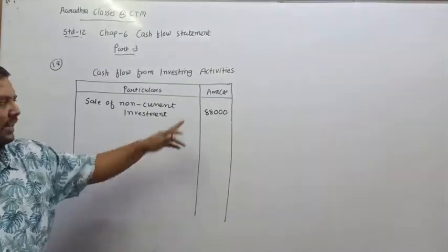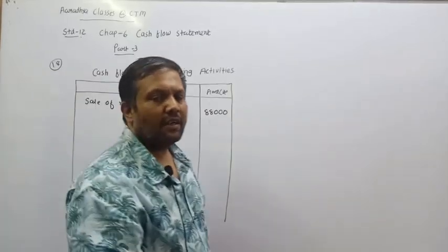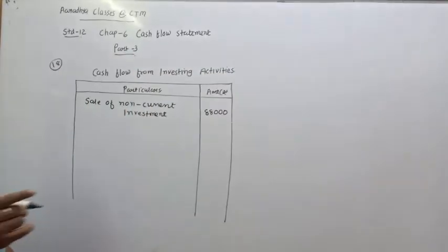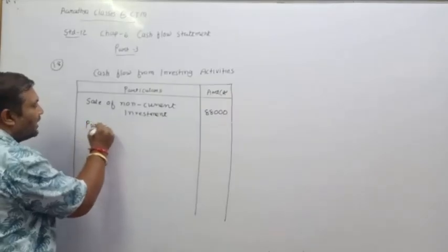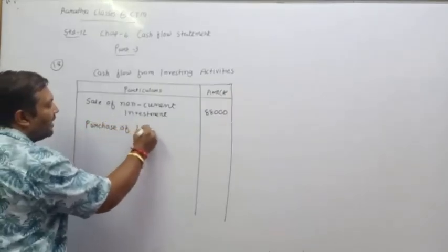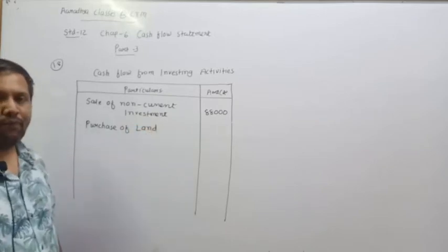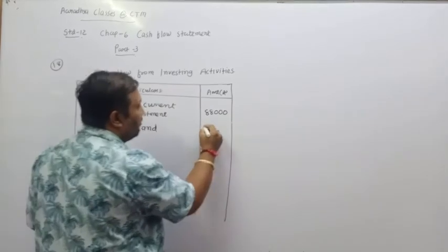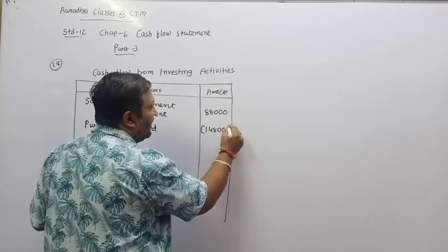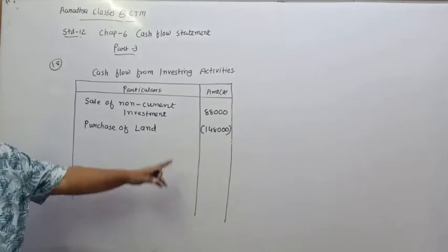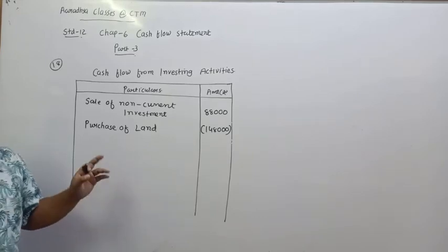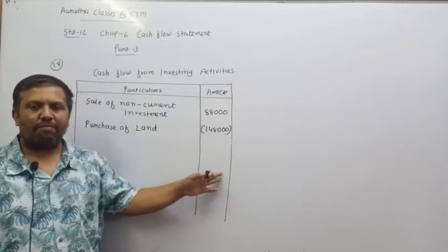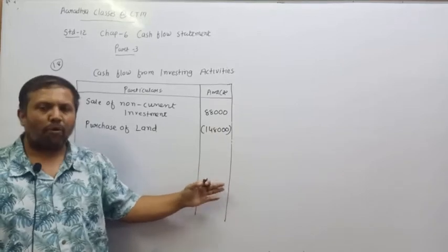Second item: purchase of land. Land is a fixed asset. Purchasing fixed assets is an investing activity, but it is an outflow because we are buying land — money is going out. So write purchase of land in investing activity as outflow: 1,48,000 in brackets (minus). Then calculate the total.